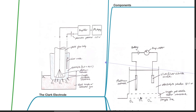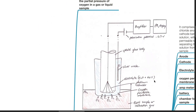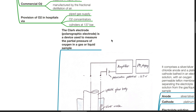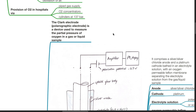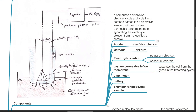The Clark electrode, or polarographic electrode, is a device used to measure the partial pressure of oxygen in a gas or liquid sample. Its components include a silver-silver chloride anode and a platinum cathode, based in an electrolyte solution, with an oxygen-permeable Teflon membrane separating the electrolyte solution from the gas or liquid sample.